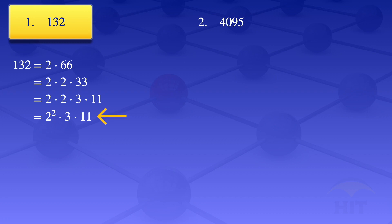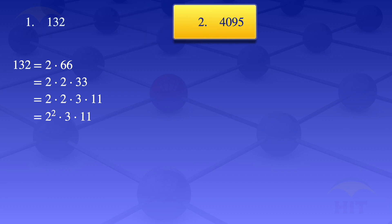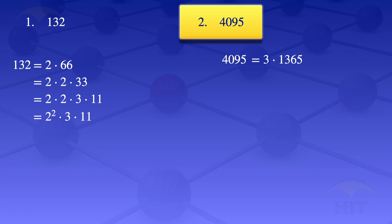So that's the prime factorization of 132. We now go on to the second part, the prime factorization of 4095. I'll write 4095 and we want to find its prime factors. Starting with the smallest prime, 2 — it doesn't divide 4095, so we go to the next one, 3. 4095 divided by 3 gives us 1365, so 4095 equals 3 times 1365.